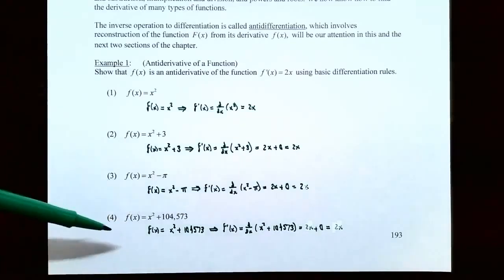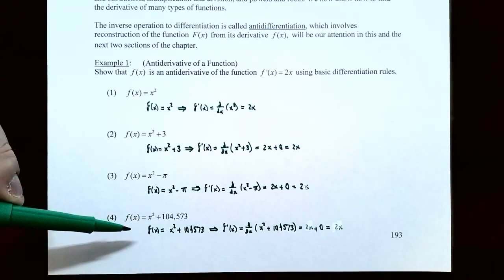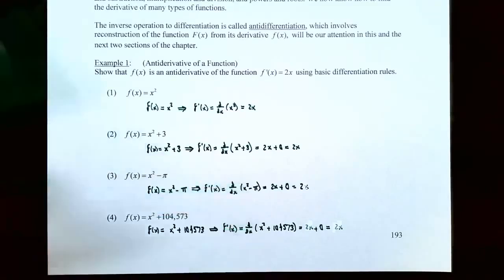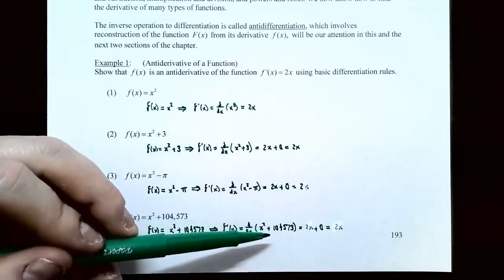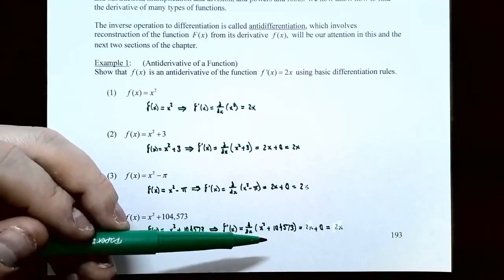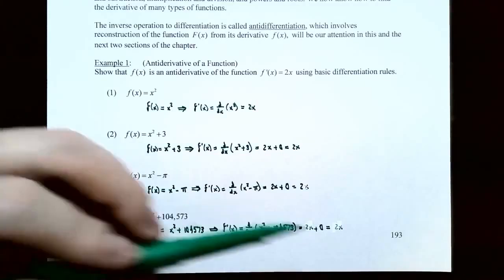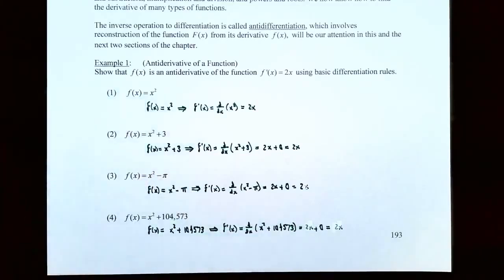Number four, f of x is equal to x squared plus 104,573. To show this is a possible antiderivative of f prime of x, take its derivative and you should get 2x. The derivative of x squared is 2x using the power rule, and 104,573 is a huge constant whose derivative is 0. So if you simplify, you get 2x. That means f of x is a possible antiderivative of f prime of x.